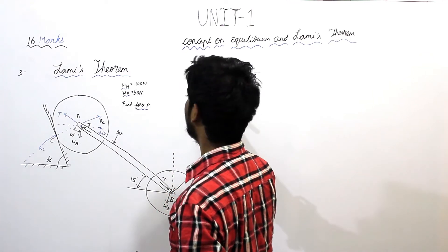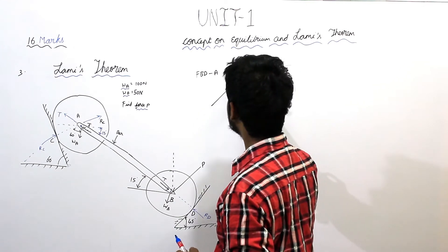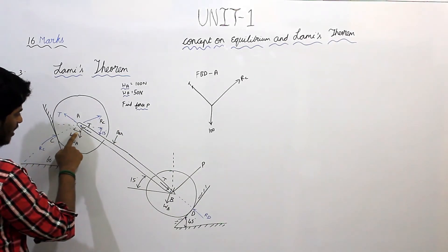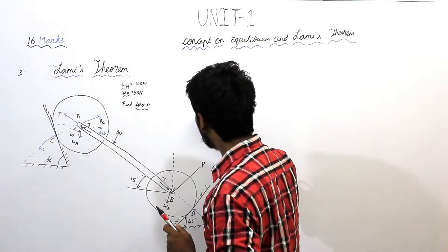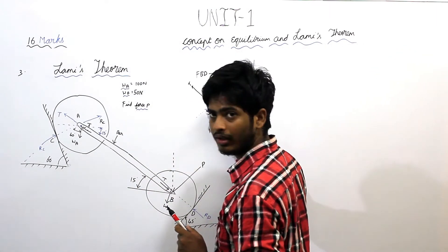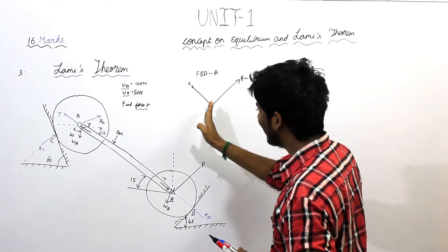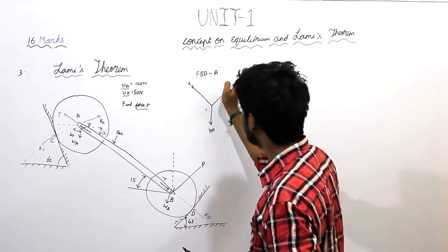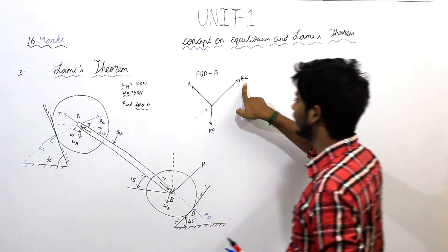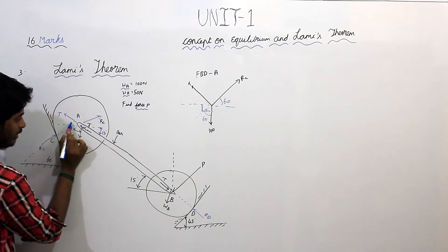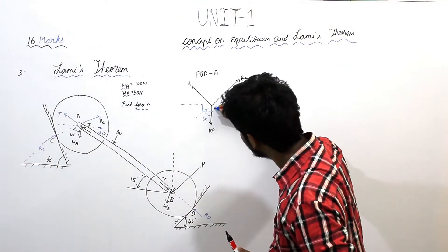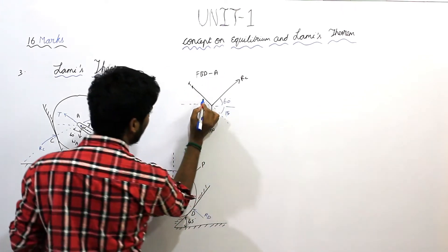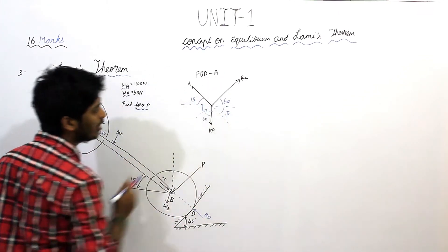For the FBD of cylinder A, this is point A. This is RC. We know that if this angle is 16, initially RC is acting in this direction. But all forces should be acting away from the centre, so we make RC act away from this point. If this angle is 15, this should also be 15 — opposite angles are equal.